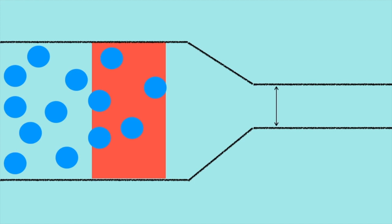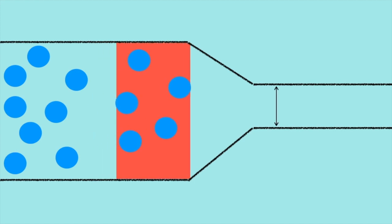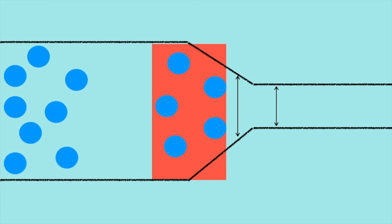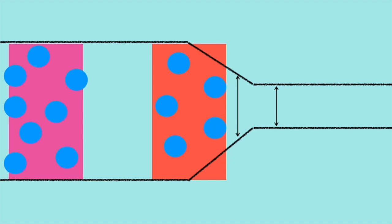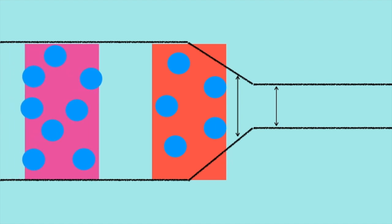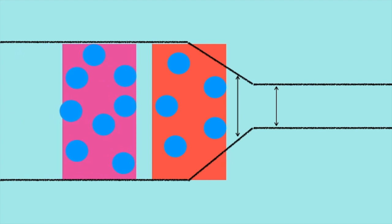As this patch of air approaches the constriction zone, less particles can flow through the neck at once because there's less space. But at the back, other groups of air particles are getting close to the constriction zone too, which means our patch of particles still has to make it through in the same time, even though there is less space to go through.